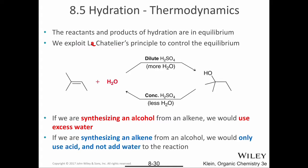Section 8.5 deals with the thermodynamics of hydration. The reactants and products are in equilibrium. We can exploit Le Chatelier's principle to control that equilibrium. If I take my alkene and water and treat it with dilute sulfuric acid - a lot of water and a little bit of sulfuric acid - I produce my alcohol. Conversely, if I treat that with concentrated sulfuric acid - mostly sulfuric acid and only a little bit of water - I regenerate the alkene, which is produced by an E1 mechanism. If we are synthesizing an alcohol from an alkene, we would use excess water. If we are synthesizing an alkene from an alcohol, we would only use acid and not add water to the reaction.